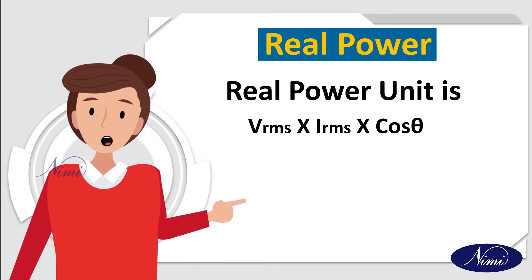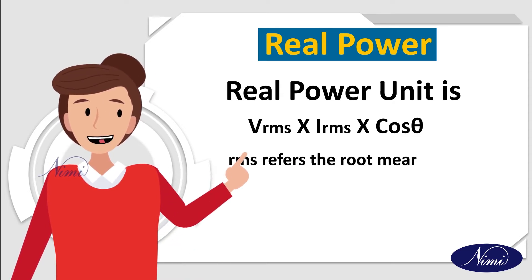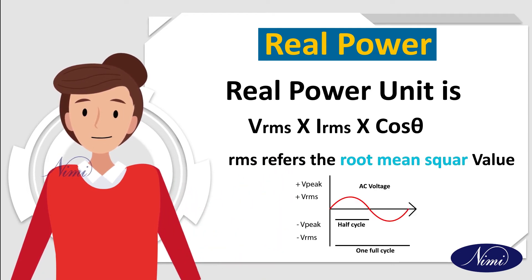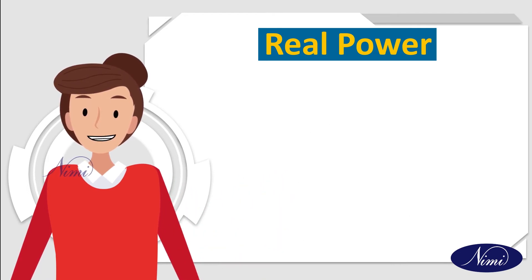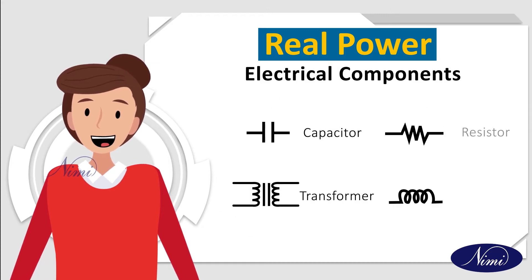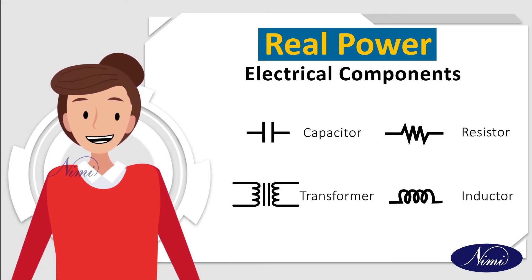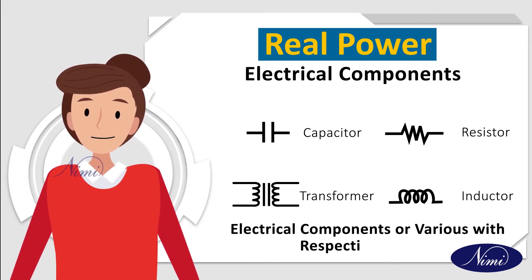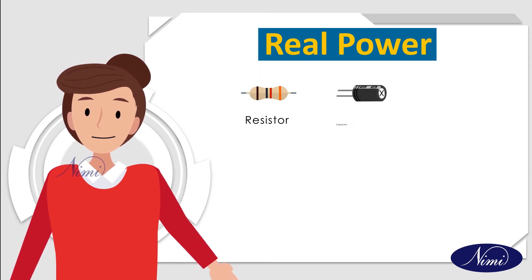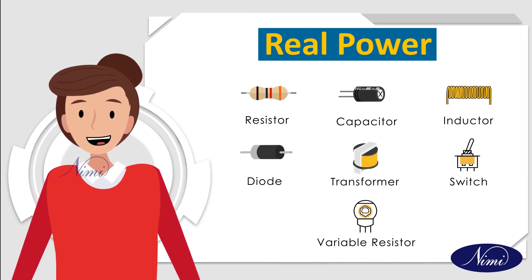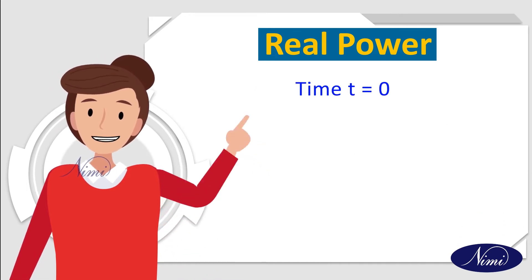Here, RMS refers to the root mean square value. In an electrical circuit, the electrical components are continuously varying — they are not stable. The value varies with respect to time. The figure shows the electrical components diagram. At time T equals 0,